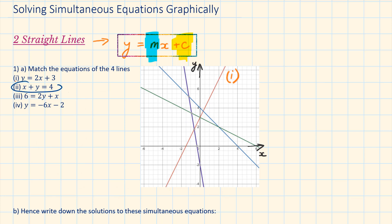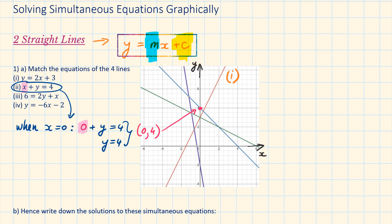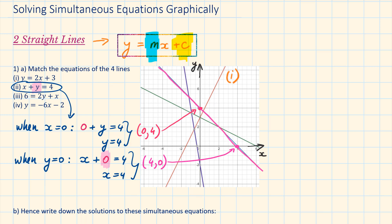2nd equation: x plus y is equal to 4. Instead of comparing it with y equals mx plus c, there is another way — we can replace the x or y values with some numbers to find different coordinate points on this line. When x is equal to 0, we have 0 plus y equals 4, so y equals 4. When y is equal to 0, x is equal to 4. Now we've got the matching line. Let's label it.